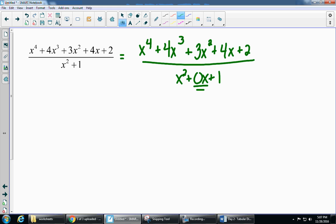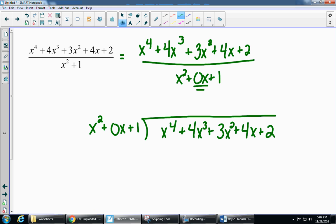So now we can set up our long division. x squared plus 0x plus 1 goes on the outside. x to the fourth plus 4x cubed plus 3x squared plus 4x plus 2 goes on the inside.